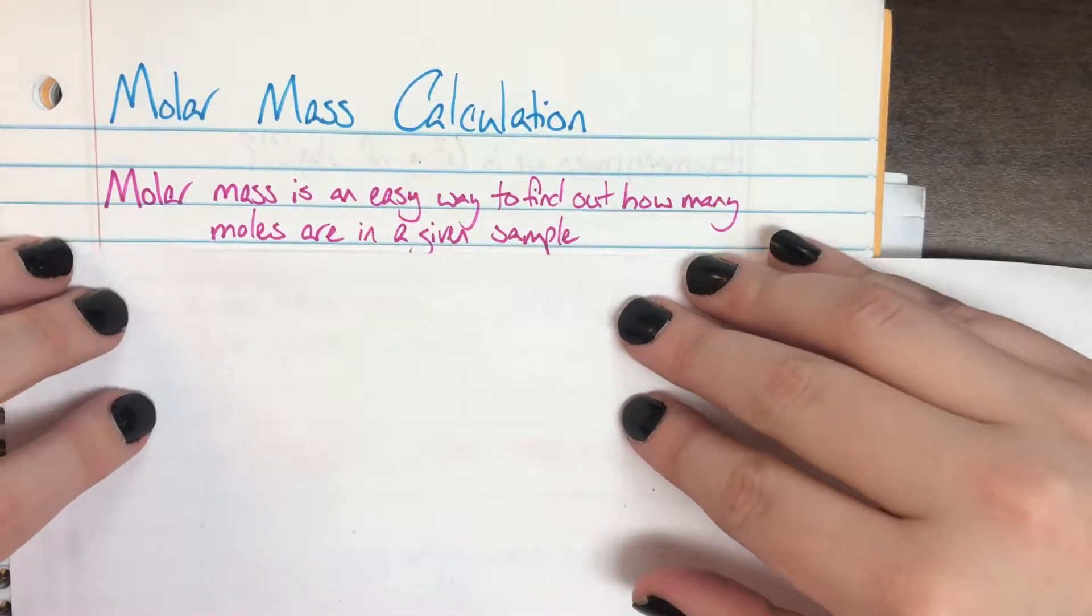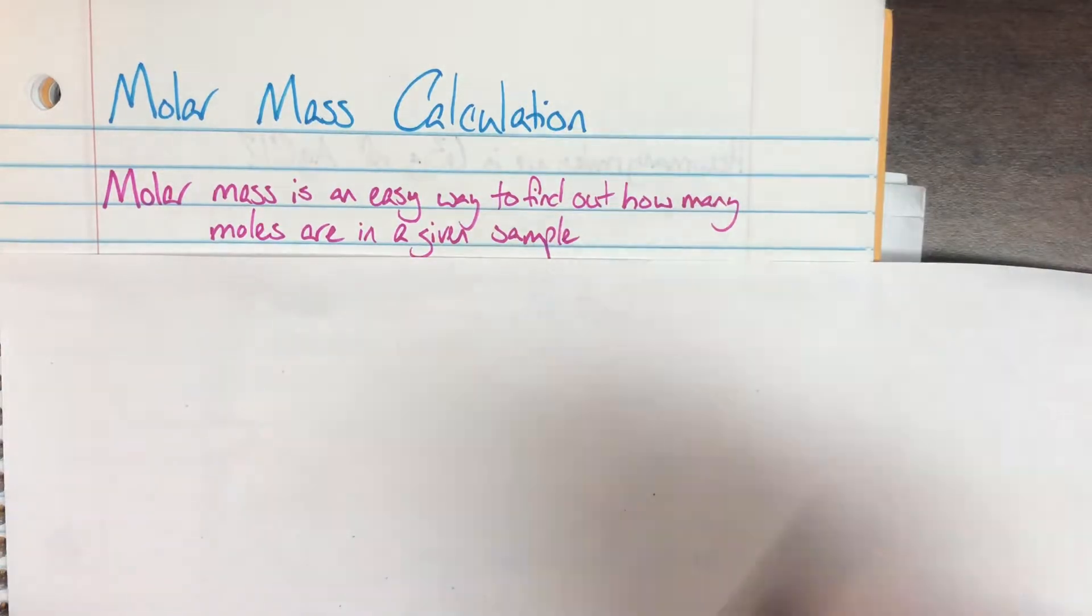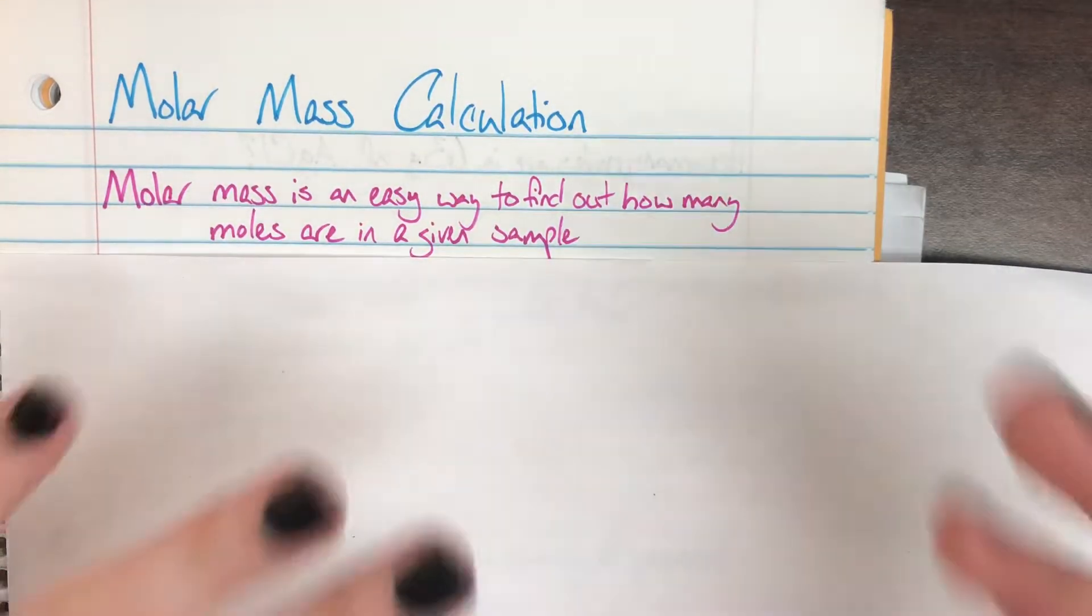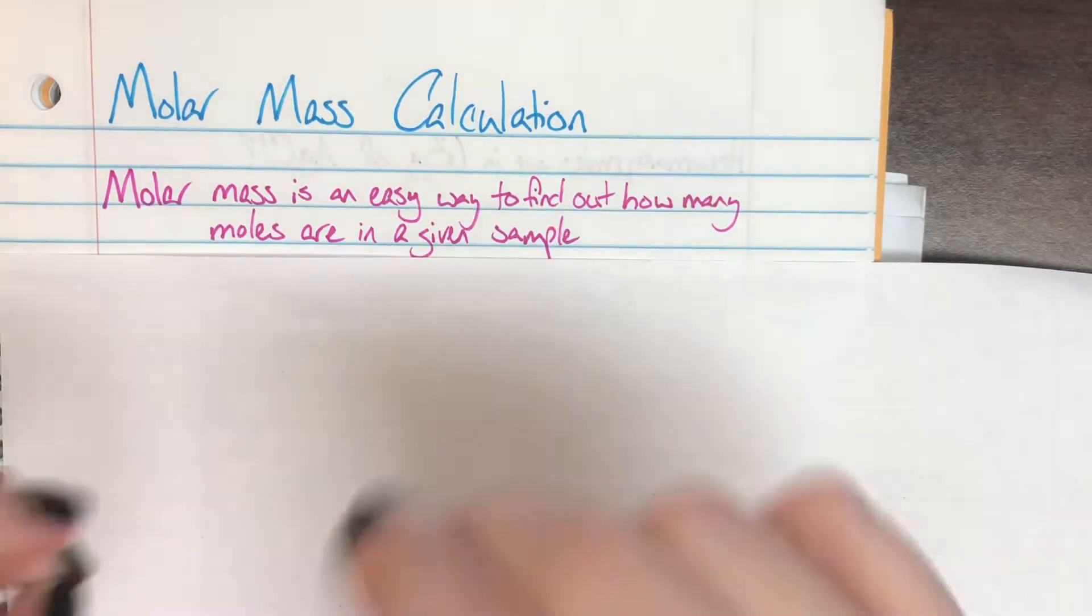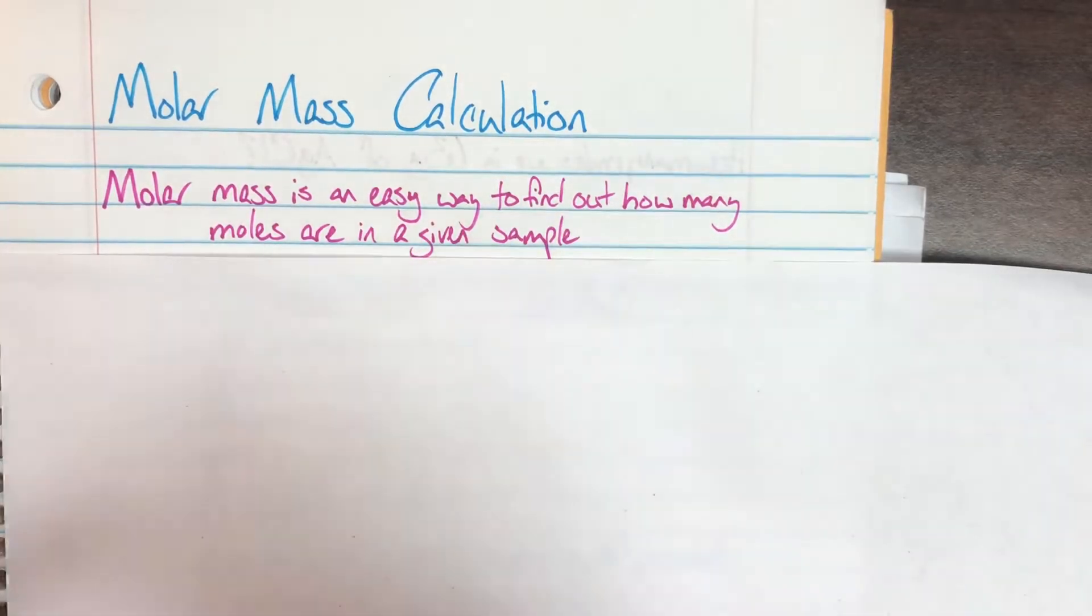So molar mass is just going to be that really quick, easy way that we're going to bridge the gap between how much we have physically on a scale and how much we have truly, like how many atoms and all that kind of stuff.